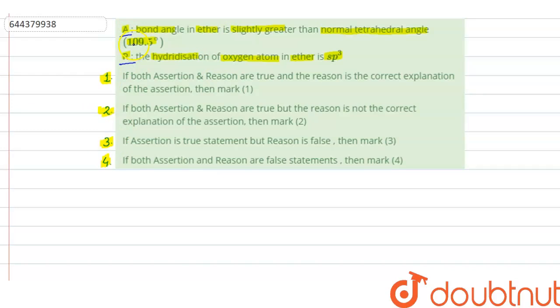So in assertion it is given bond angle in ether is slightly greater than the normal tetrahedral angle 109.5 degree. If we see the structure of ether, in ether we have oxygen and to this oxygen we have two R groups attached.